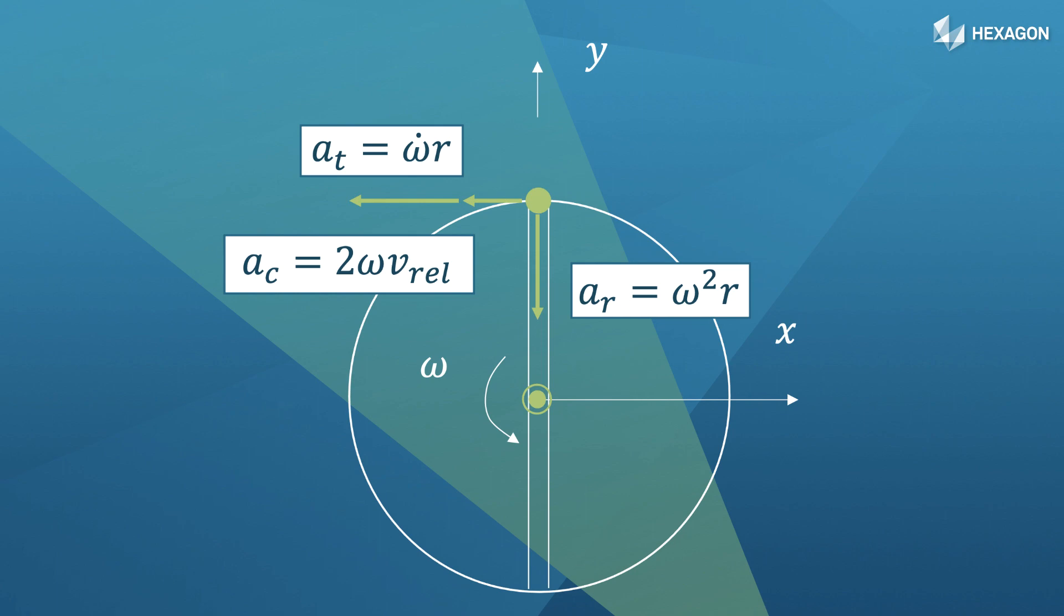One can think of the Coriolis acceleration as a result of the spiraling motion that you experience as you move away from or toward the center of the merry-go-round.